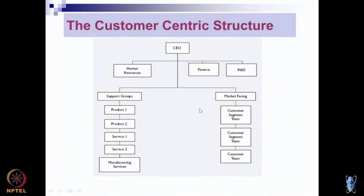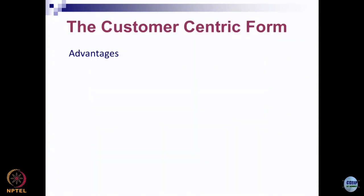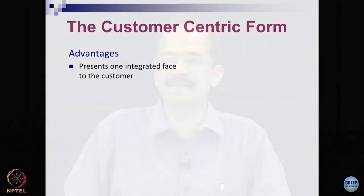This design has the element of functional structure, but those functions do not continue to the last hierarchical level. They are more specialized functions that remain in the corporate office. The biggest part of the organization is designed around the customer — one segment related to the support group and one to the market-facing group. An advantage of customer-centric organization is that it presents an integrated face to the customer — not many people from the same organization have to interact with the customer.